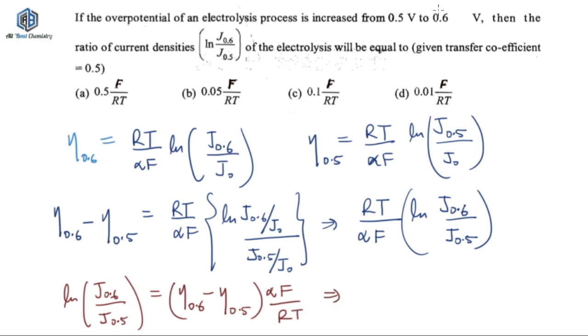So eta 0.6 is 0.6 volt only. So overpotential is increased from this to this. So 0.6 minus 0.5, and then you will be having put the value of alpha that is 0.5 F divided by RT. So once you do that, here you will be getting 0.1. Once you multiply this with 0.5, so you will be getting 0.05 F upon RT. So that's how you have to solve it and that's how you get option number B.